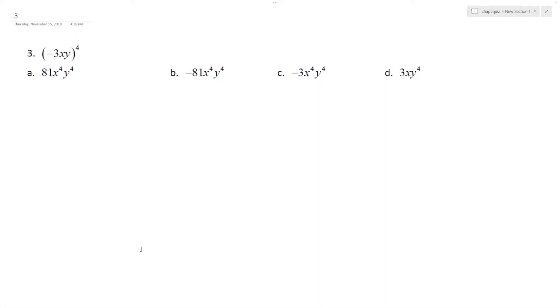So we want to figure out what this is: negative 3xy raised to the fourth. This is the same thing as writing negative 3 raised to the fourth times—and then each component raised to the fourth, I'll just do it like this—times x raised to the fourth times y raised to the fourth.